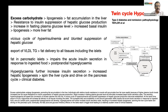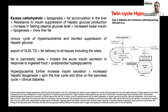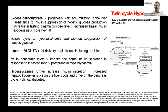There is a vicious cycle of hyperinsulinemia and blunted suppression of hepatic glucose production. There is export of VLDL triglyceride to all tissues, including the pancreas. Fat in the pancreatic islets leads to impaired acute insulin secretion in response to ingested food, producing postprandial hyperglycemia. This hyperglycemia further increases insulin secretion, and more insulin means more fat in both liver and pancreas. These twin cycles — the cycle of the liver and the cycle of the pancreas — contribute to the pathogenesis of diabetes.